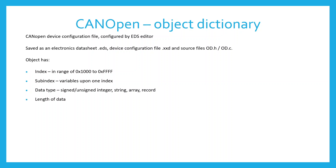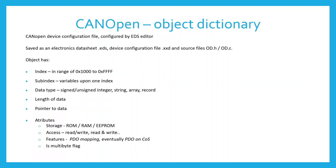Each object has a data element and pointer to data. The object also has attributes. These are type of storage, PDO mapping and PDO on COS which will be explained later, read/write property, and multiplex flag.